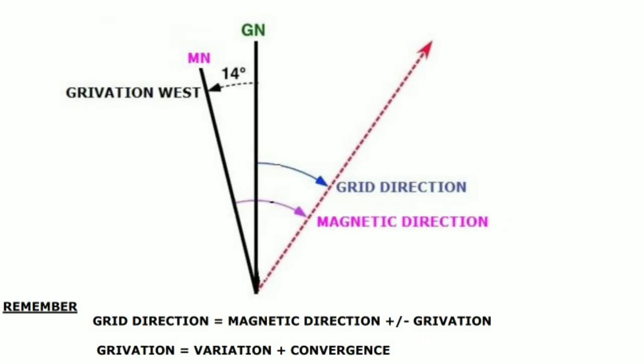Similarly for grivation west: you can see in the diagram that grid direction is less than magnetic direction, so magnetic direction value is greater than grid direction. Remember: grid direction equals magnetic direction plus or minus grivation. If you apply grivation to magnetic direction you get grid direction, or applying grivation to grid direction gives you magnetic direction.